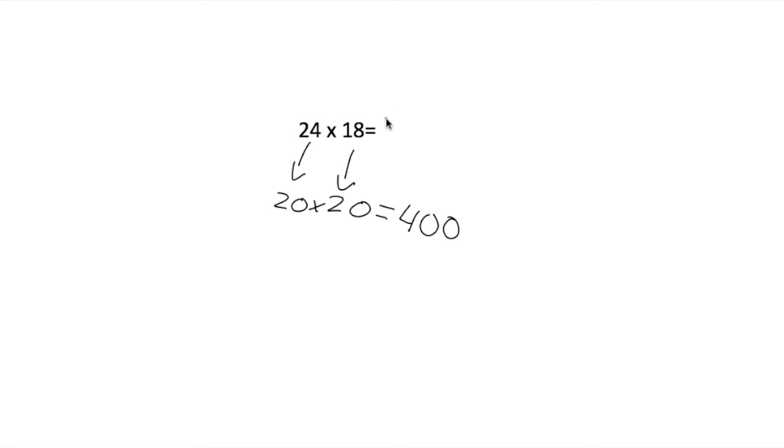And I'm going to explain why we rounded both of them to 20 in just a minute. So 400. So the reason why we rounded to 20: if you guys, anything after 5, let's say our number here would be 25, anything after 5 you round forward. So if this is 25 we round to 30.